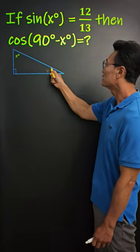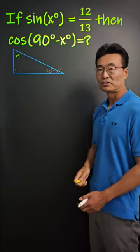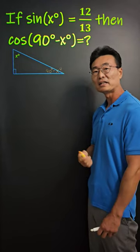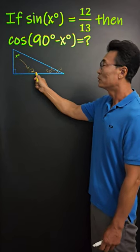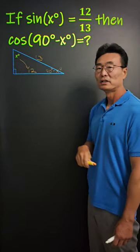We let this angle be x degrees, then this angle will be 90 degrees minus x degrees. Then, using the definition of sine, the opposite side is 12 and the hypotenuse is 13.